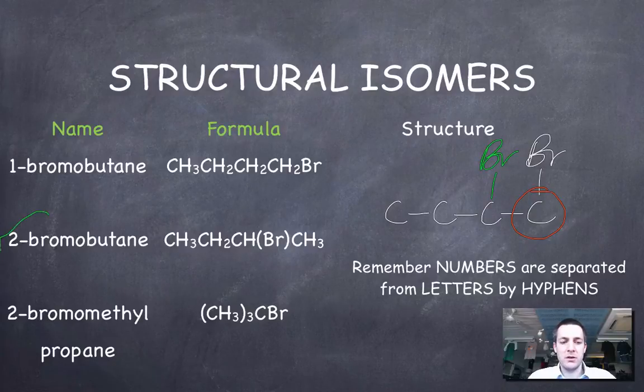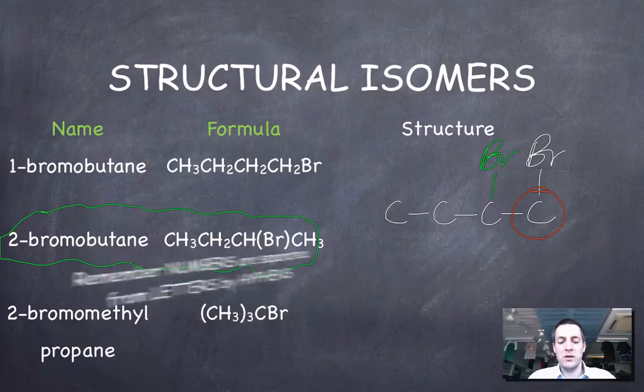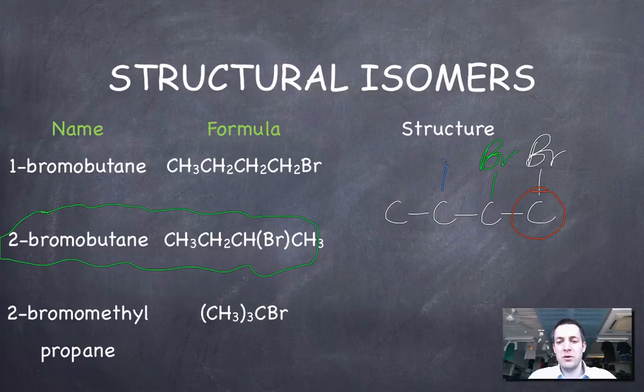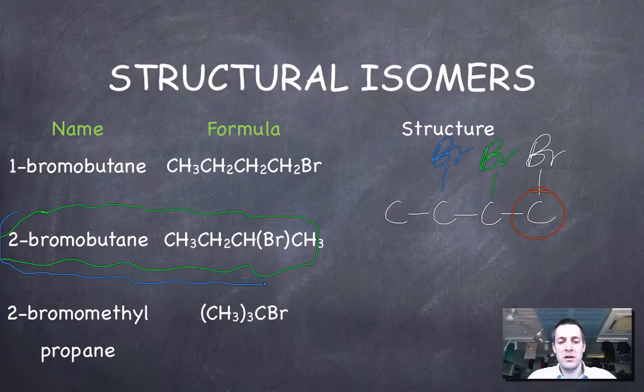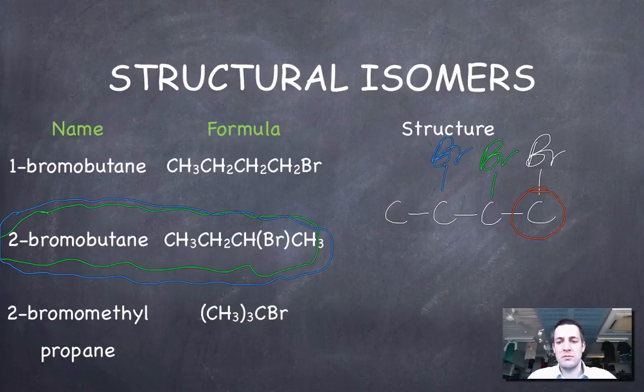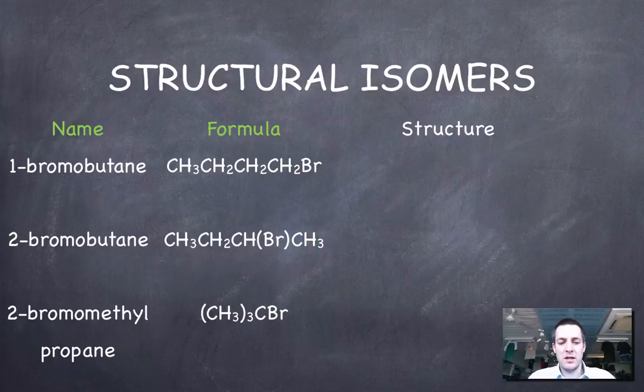And notice that there wouldn't be a 3-bromobutane. Remember I'm counting from this end which might seem a little bit odd, but there wouldn't be a 3-bromobutane because the second carbon along is also the third if you're counting from the other end. So it doesn't matter which of these two positions you put your bromine in, it will always be 2-bromobutane.